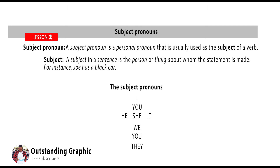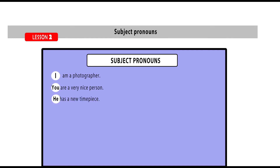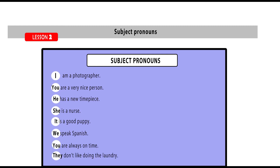Now let's try using the subject pronouns in random sentences: I am a photographer. You are a very nice person. He has a new timepiece. She is a nurse. It is a good puppy. We speak Spanish. You are always on time. They don't like doing the laundry.